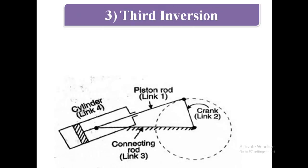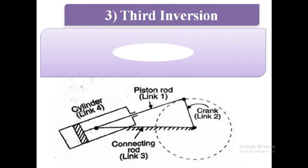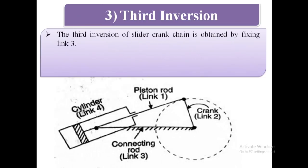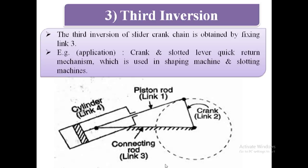Third inversion: the third inversion of slider crank chain is obtained by fixing link 3, that is the connecting rod. As shown in the image, link 3 is fixed. Examples or applications are the crank and slotted lever quick return mechanism, which is used in shaping machines and slotting machines.